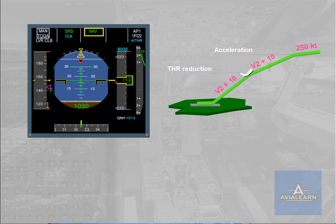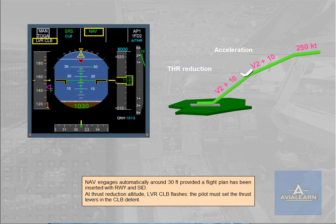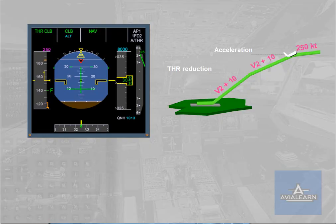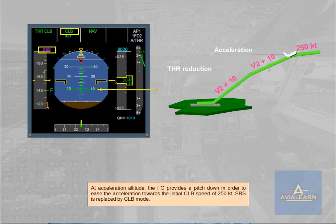At thrust reduction altitude, the lever climb indication flashes and the pilot must set the thrust levers in the climb detent. At acceleration altitude, the FG provides a pitch down in order to ease the acceleration towards the initial climb speed of 250 knots. Speed Reference System is then replaced by climb mode.